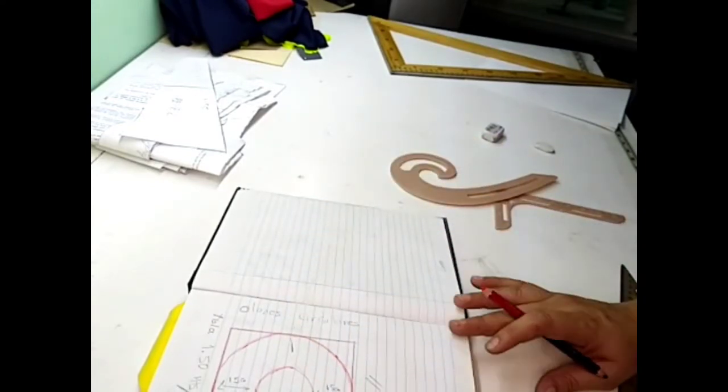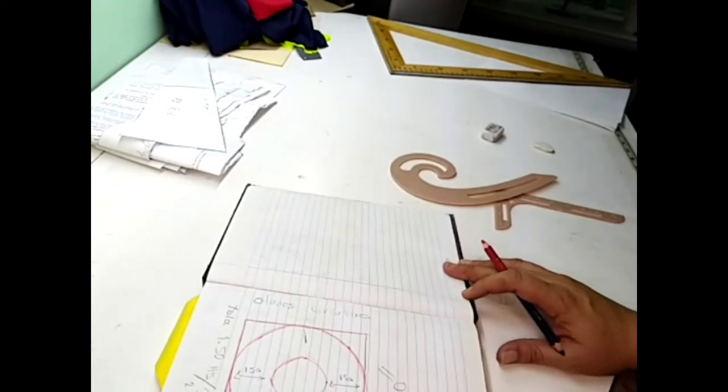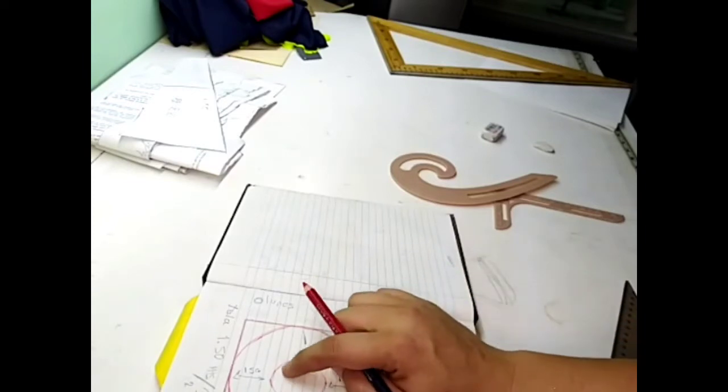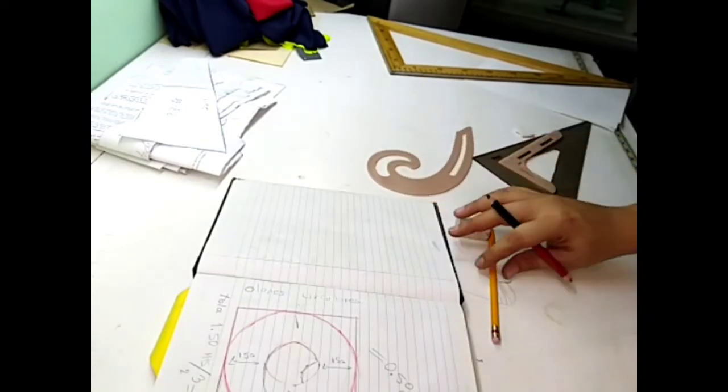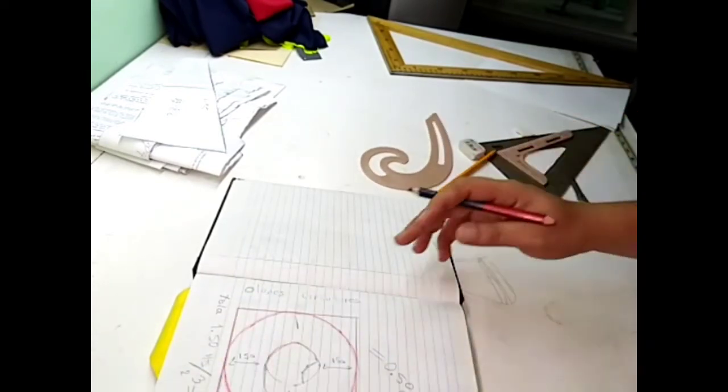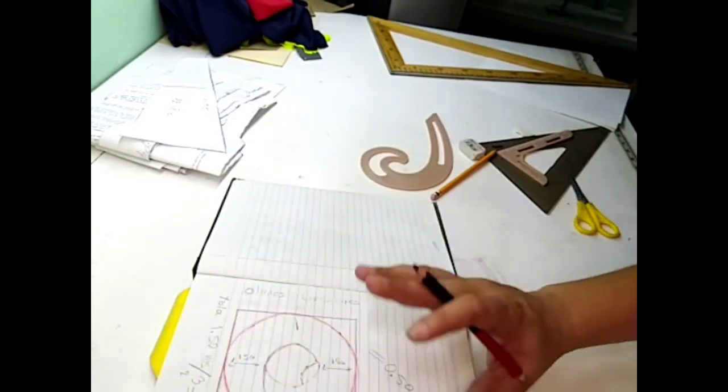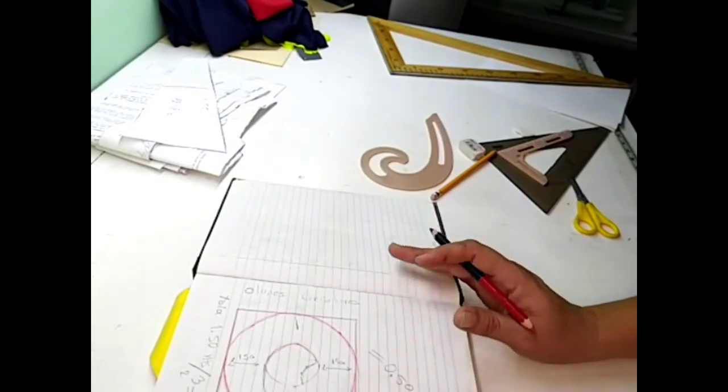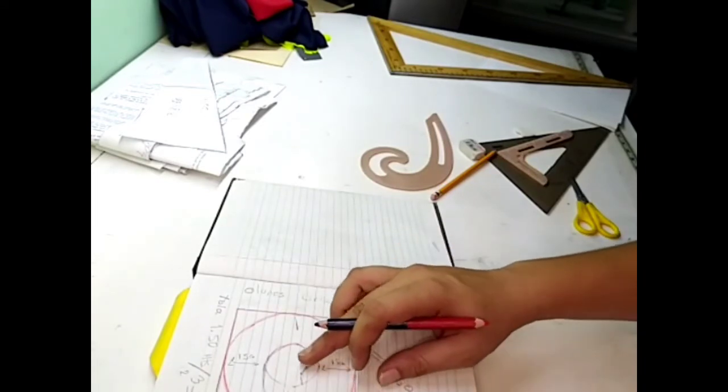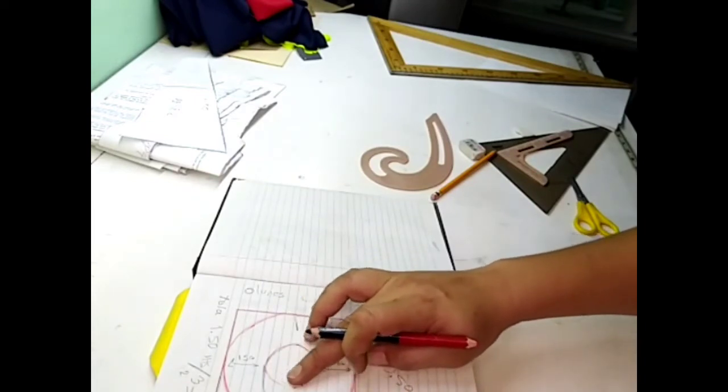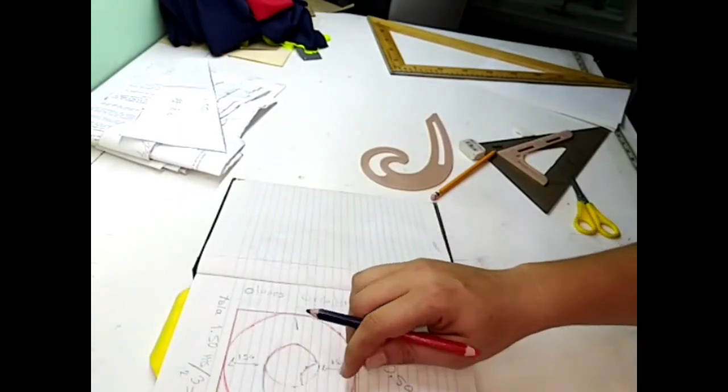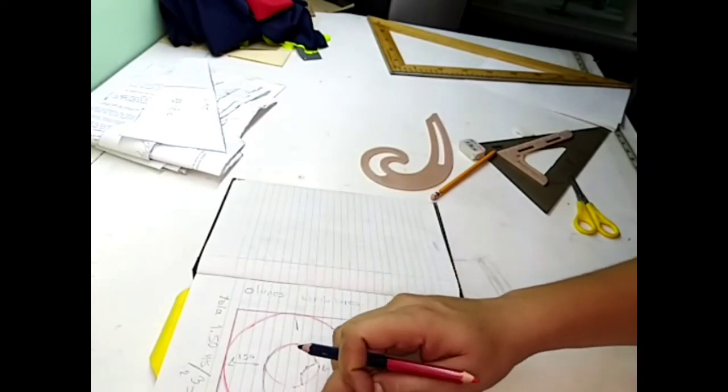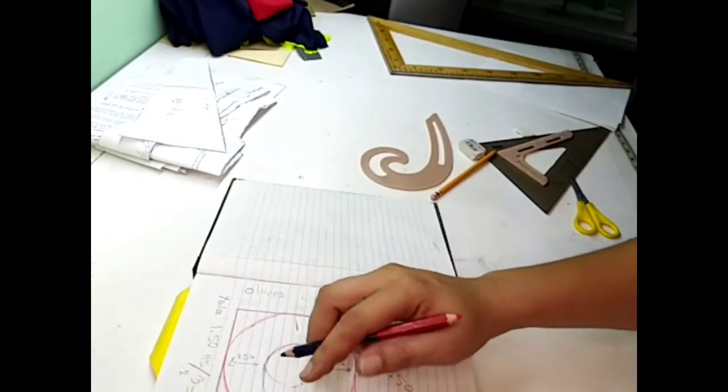Vamos a hacer otro truquito para que nos quede más tela, para que no nos sobre esta parte del círculo. Otra de las formas que yo tengo para economizar un poco más de tela, o más bien aprovechar al máximo todo esto. Definitivamente las esquinas tenemos que quitarlas porque es circular. ¿Qué es lo que yo hago? Agarro, integro esta parte del círculo hacia mi holán.